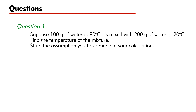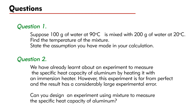Question 1: Suppose 100 g of water at 90 degrees Celsius is mixed with 200 g of water at 20 degrees Celsius. Find the temperature of the mixture and state the assumption you have made in your calculation. Question 2: We have already learned about an experiment to measure the specific heat capacity of aluminium by heating it with an immersion heater. However, this experiment has a considerably large experimental error. Can you design an experiment using mixture to measure the specific heat capacity of aluminium? Be the first to write your answer in the comments below. I hope this video helps you understand more about finding the temperature of a mixture. Thank you for watching.